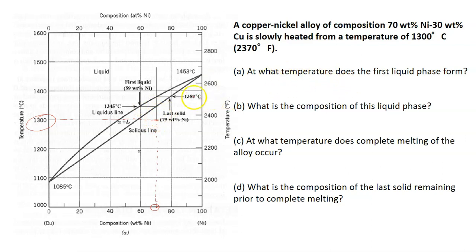To answer this question, you just drag this point upward until it touches the solidus line, and when it starts to enter this binary phase composed of both liquid and solid — once it reaches this solidus line, there will be some presence of liquid already in the system. The temperature when the first liquid phase forms is at this temperature, around 1345°C.